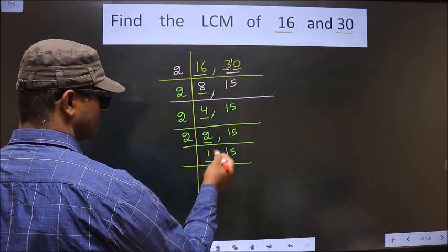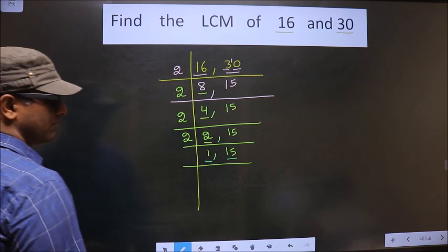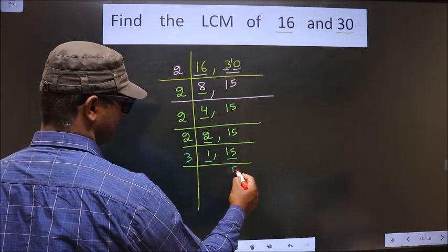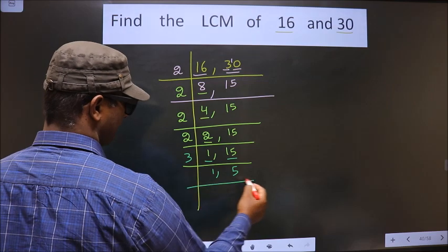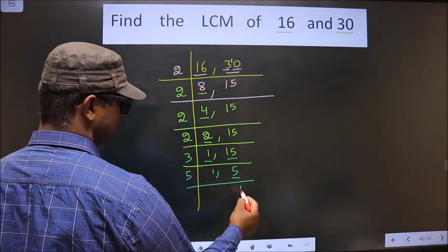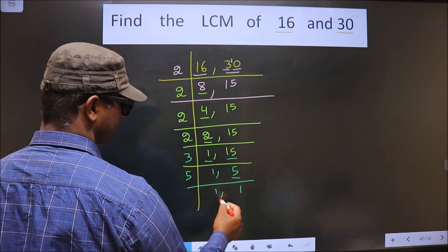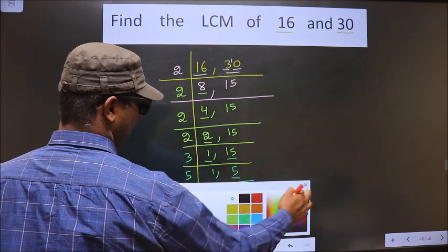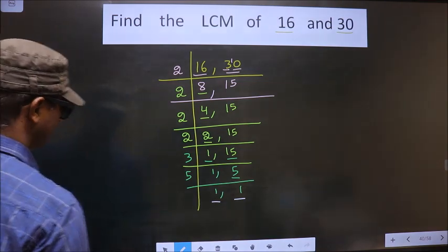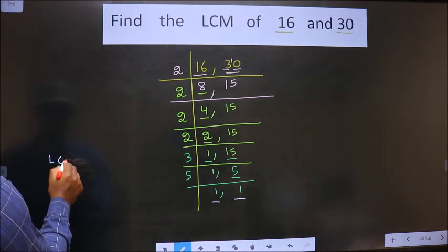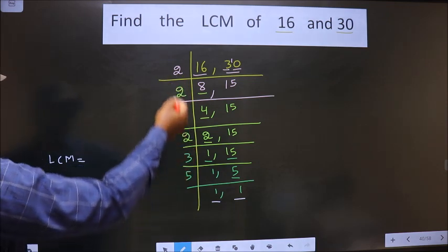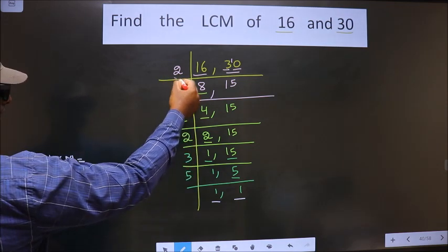Now here we have 1. 15 is nothing but 3 times 5 equals 15. Now here we got 5. 5 is a prime number, so 5 times 1 equals 5. So now we got 1 in both places. So now our LCM is the product of these numbers.